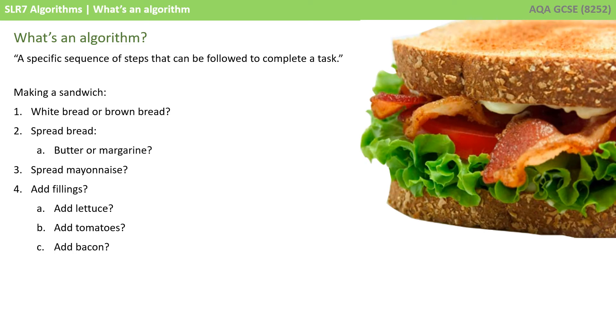Let's take this simple example of making a bacon sandwich. We could say the algorithm starts by asking: do you want white or brown bread? Then spread the bread.